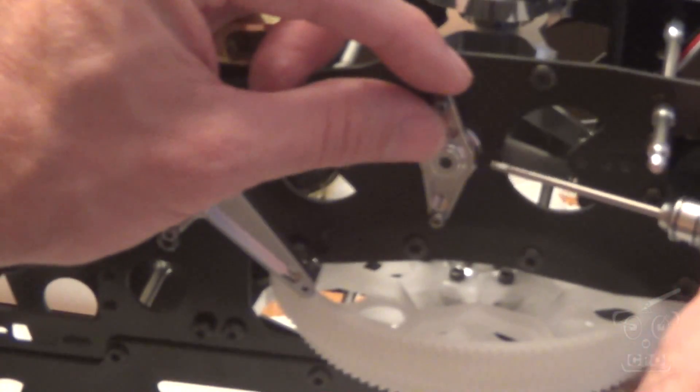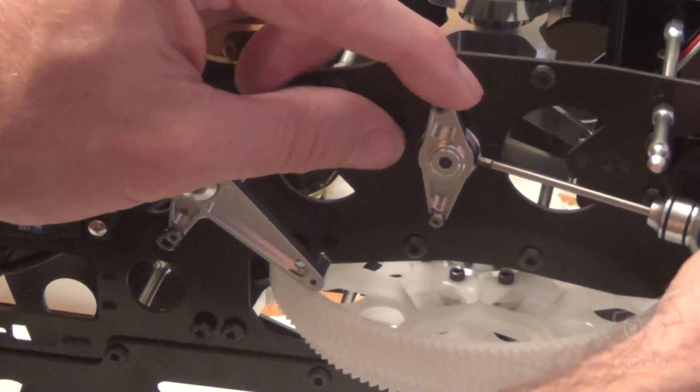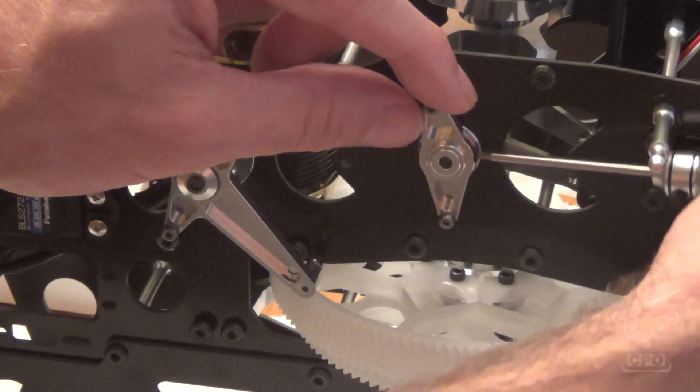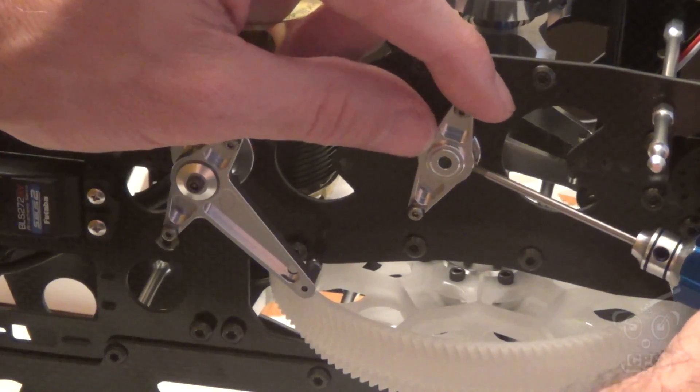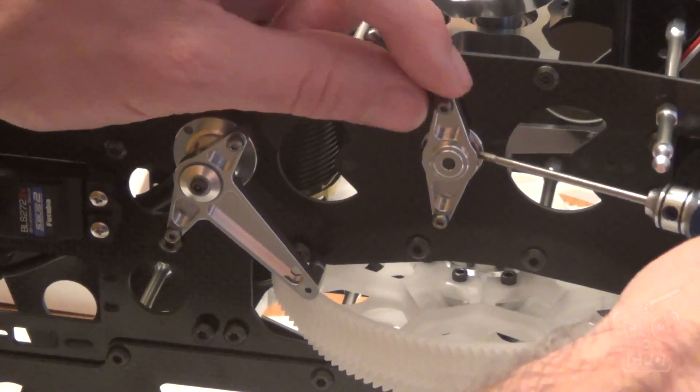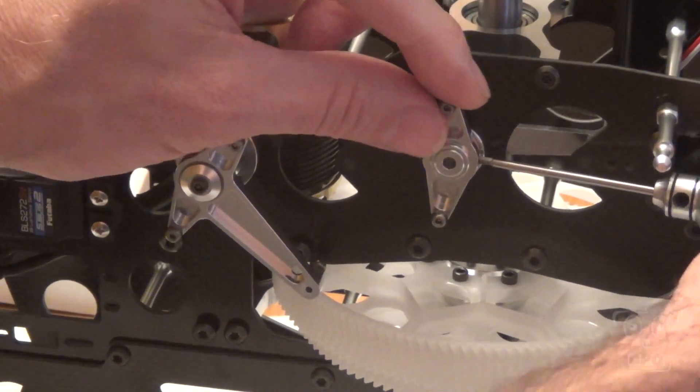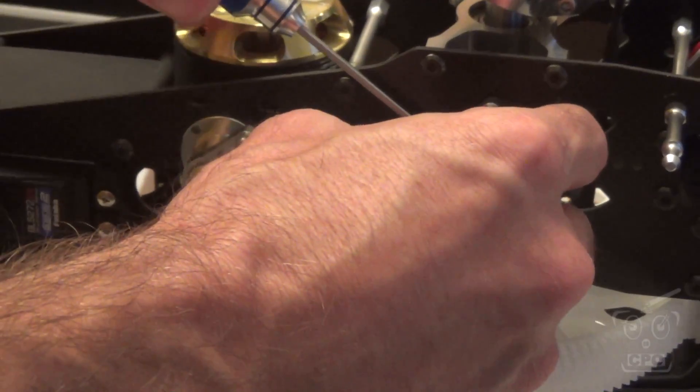Now we're going to put on our elevator control lever using the smaller grub screws that we had. And again, I'm just kind of feeling there's some detents that you would screw those into to lock them in place. And as I'm tightening, I'm just kind of wiggling it to find those spots. And you'll know when you get it. Tighten it all down.